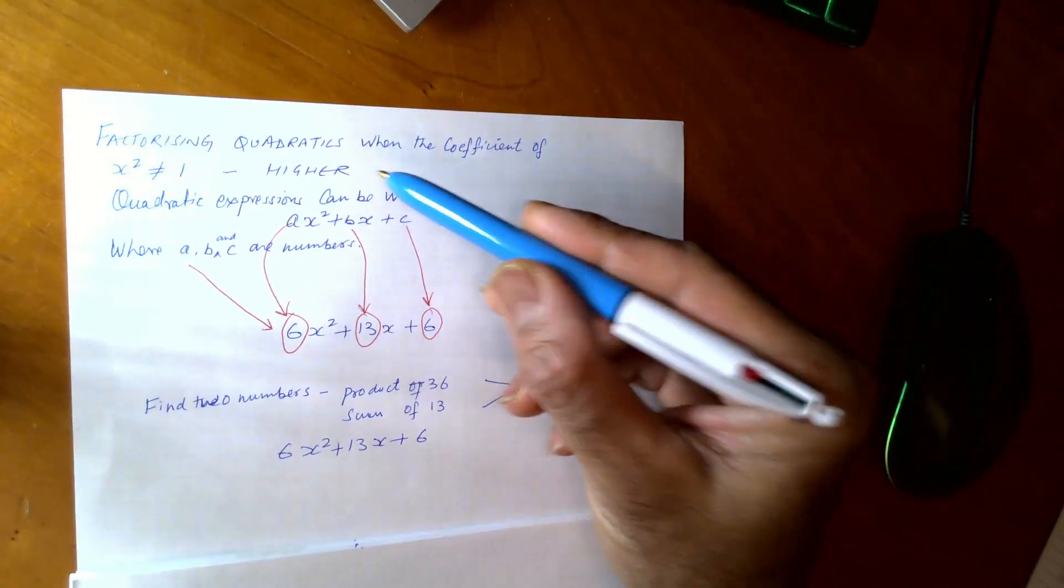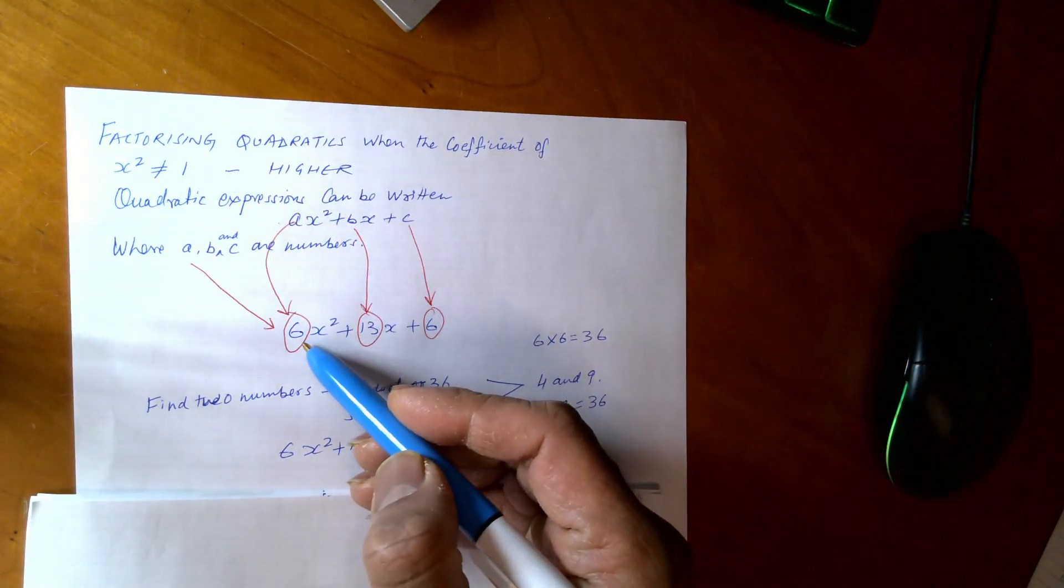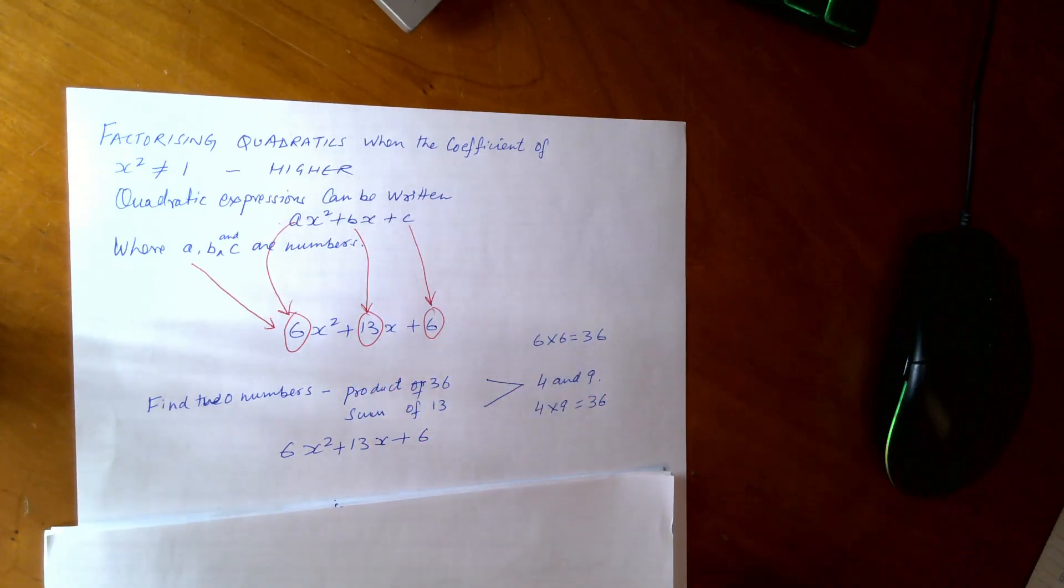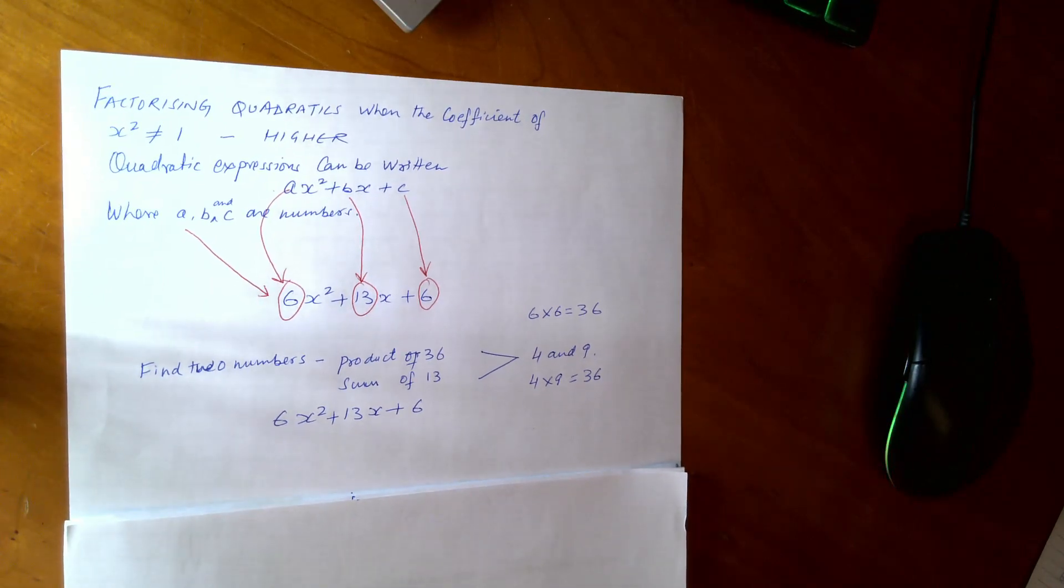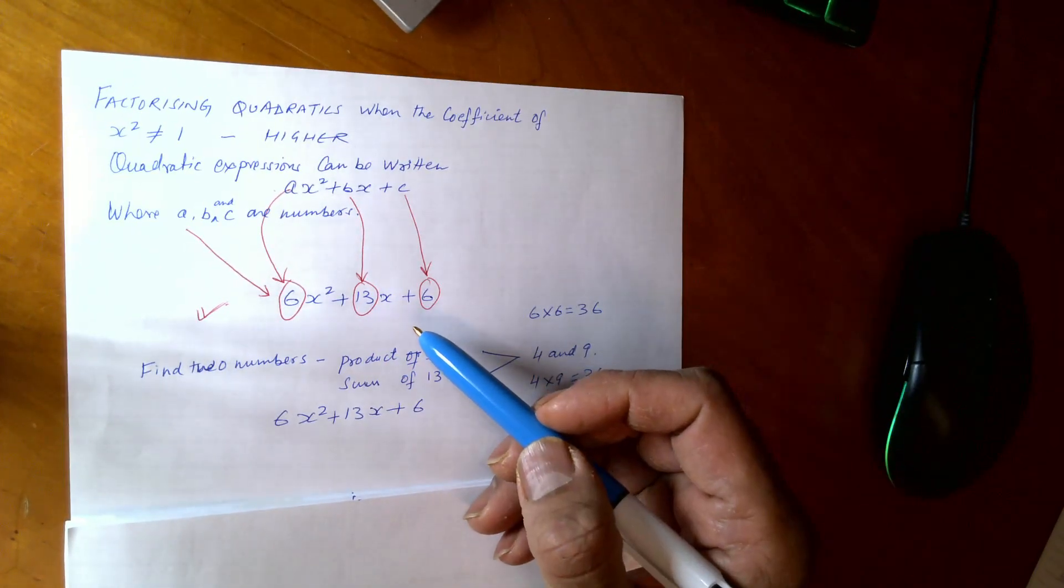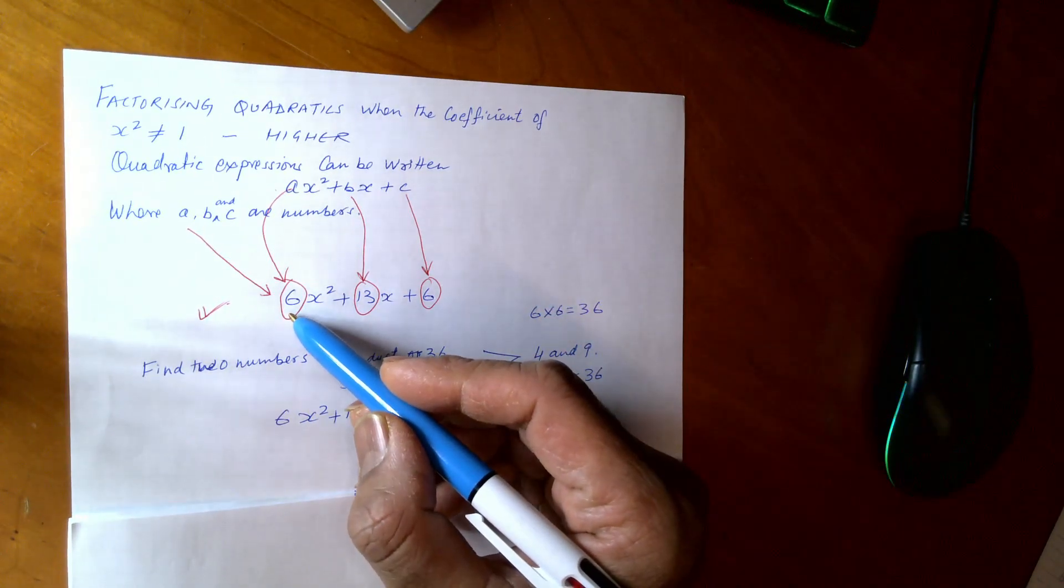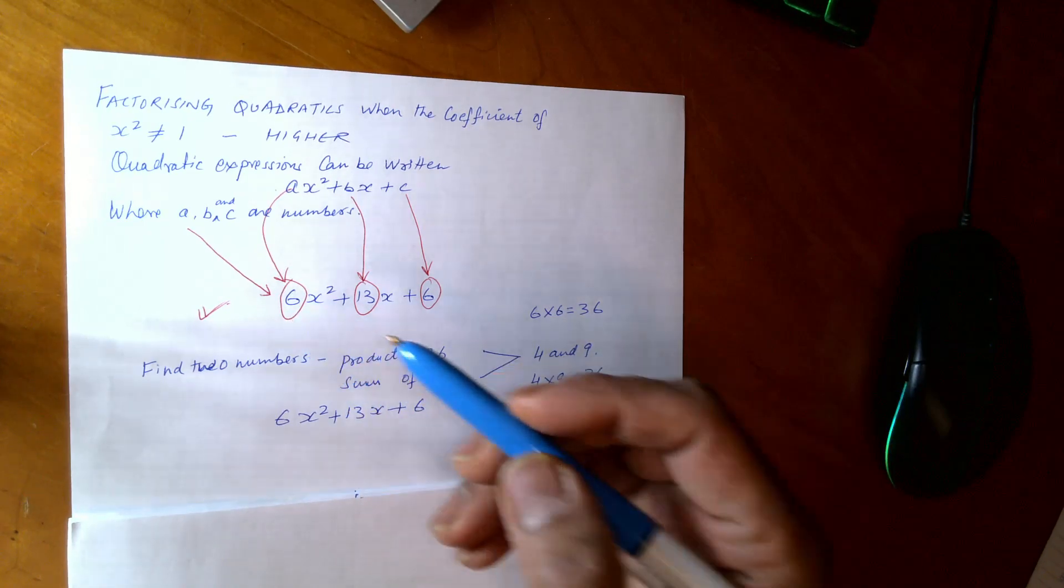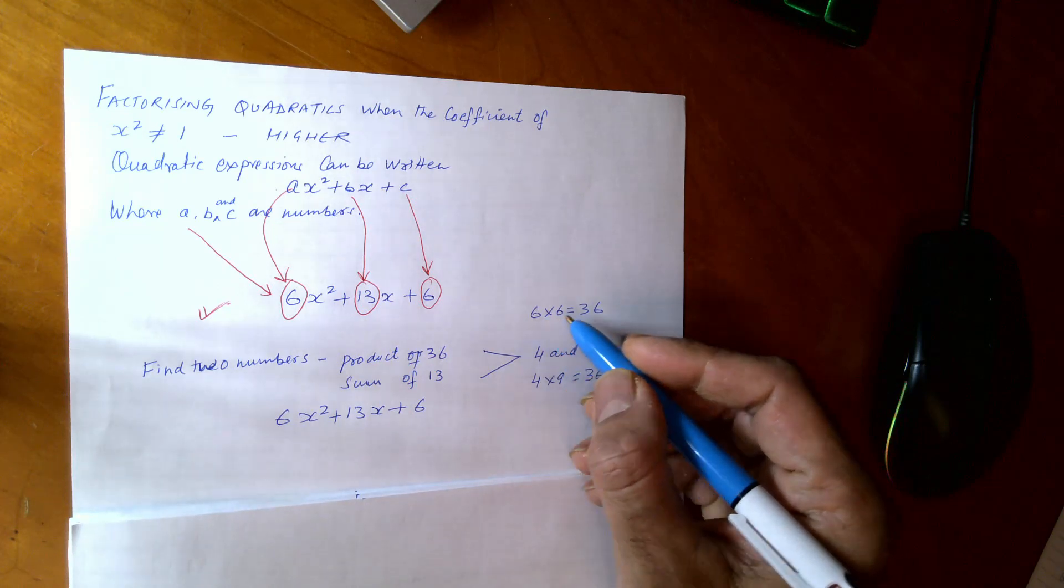So you know when the coefficient of x squared is not equal to 1, so anything is more than 1. Now let's move on to this equation. To factorize this equation, first what we do is we multiply this coefficient, which is your a with the c and see what it comes out. So you see here, 6 multiply 6 is 36.